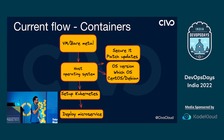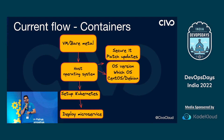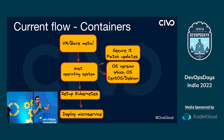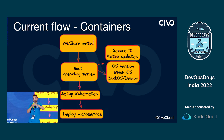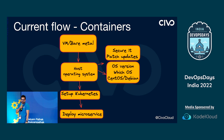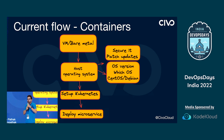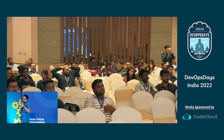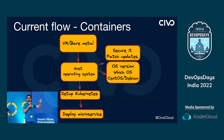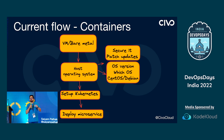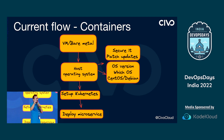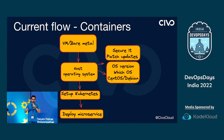The current flow many organizations follow is: you have a VM or bare metal (self-managed), then you install the host operating system — using the same operating systems we've been using for years like Ubuntu, CentOS — and you install Kubernetes on top of that, then deploy your microservices. The challenge is that managing patches is difficult because of security vulnerabilities, OS version differences, and even across different cloud providers, the same OS image can have different flavors with differing packages.